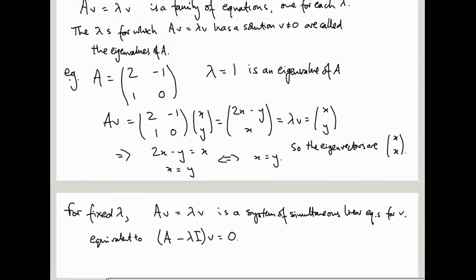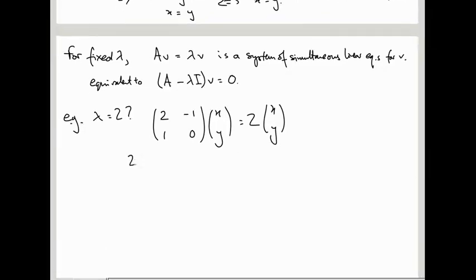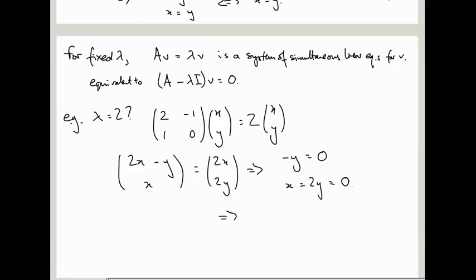Let's say lambda = 2. Let's check that lambda = 2 is not an eigenvalue of A. [[2,-1],[1,0]] times (x,y) equals 2 times (x,y). This is the equation we want to solve and show that any solution is just zero. If I multiply out, I get (2x-y, x) = (2x, 2y). So the first equation 2x - y = 2x tells us y = 0, minus y = 0. The second is telling us x = 2y, and that equals zero by virtue of the first equation. So x = y = 0.